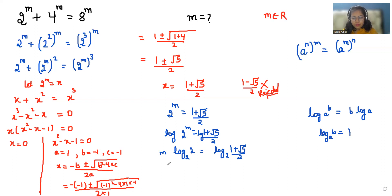So m = log((1 + √5)/2) / log 2. This is the value of m.